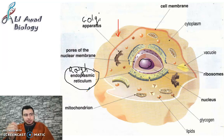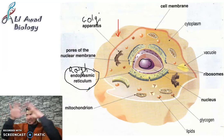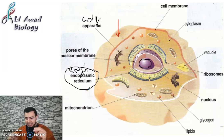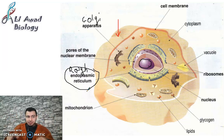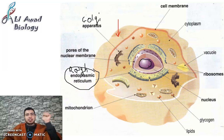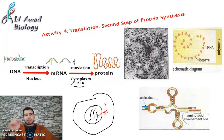Here is a simple analogy: imagine I want to translate a text from Arabic to English. I need the original text, tools like a pen and paper, a desk, and a room. The room I'm sitting in is the endoplasmic reticulum. The original Arabic text is the mRNA, and the English output is the protein.